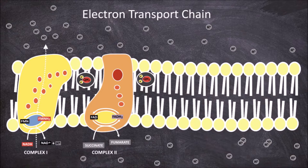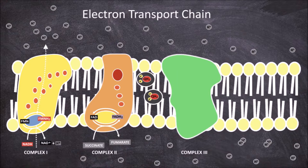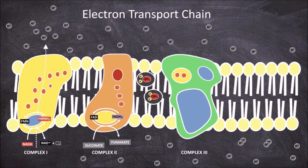From here, the electrons from complex 1 and complex 2 are moved by the mobile electron carrier ubiquinol to complex 3. Complex 3, also known as coenzyme Q cytochrome C reductase, consists of iron protoporphyrin containing cytochrome B, a heme B containing cytochrome C1, and one 2-iron 2-sulfur cluster center called the RISC protein. Within complex 3, a process known as the ubiquinone or Q cycle occurs.